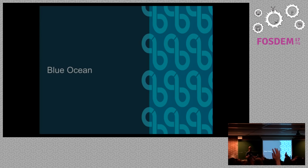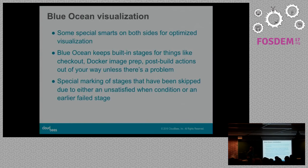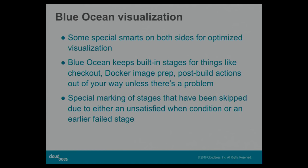Who here has heard of Blue Ocean? If you haven't, you should check it out — it's visually very impressive by Jenkins standards. I'm not going to talk too much about it since I'm not a UI person, but I wanted to mention a couple of things declarative-specific in Blue Ocean. We have special smarts on both sides for optimized visualization, including operations inside declarative like the SCM checkout, Docker image prep or container building, and post-build actions.